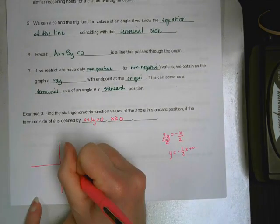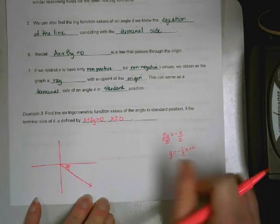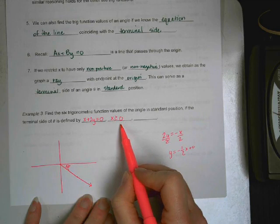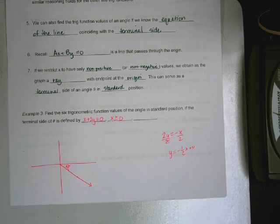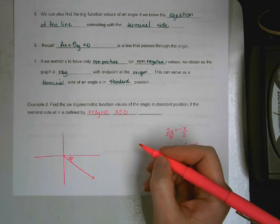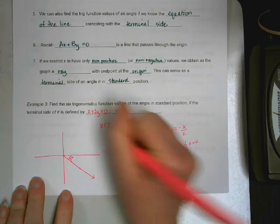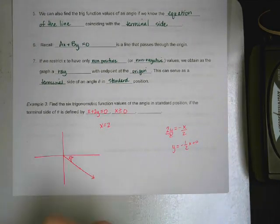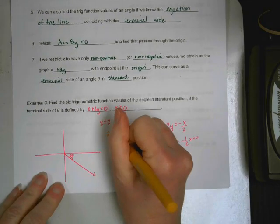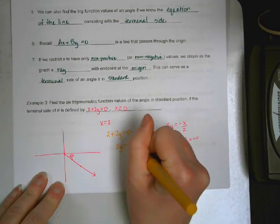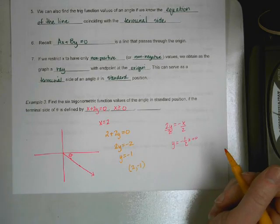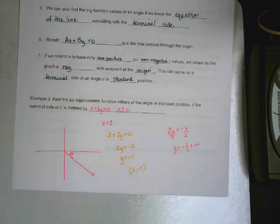And I am looking for the six trig functions that go with this. Alright, well, it says, as long as I use X is greater than or equal to 0, any point will work. So, I'm going to pick an arbitrary X value. It doesn't matter what X value you choose. So, I keep the origin. So, I'm going to use, let's just say, X is 2. So, I'm going to take X equals 2, and I'm going to plug it into the equation that they did. So, that's going to be 2 plus 2Y equals 0. So, 2Y equals negative 2. So, Y equals negative 1. So, now I have a point that I can use.